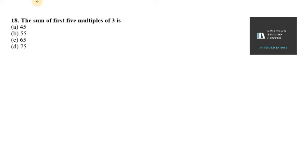Question 18 says the sum of first 5 multiples of 3 is. So first of all, let's write the multiples of 3: 3, 6, 9, 12, it will be 15.